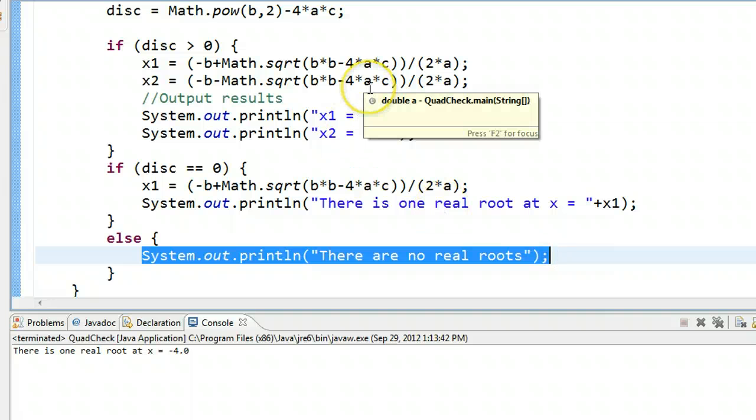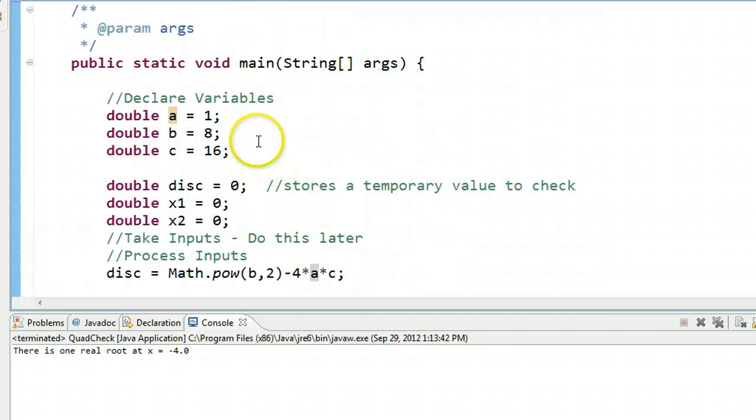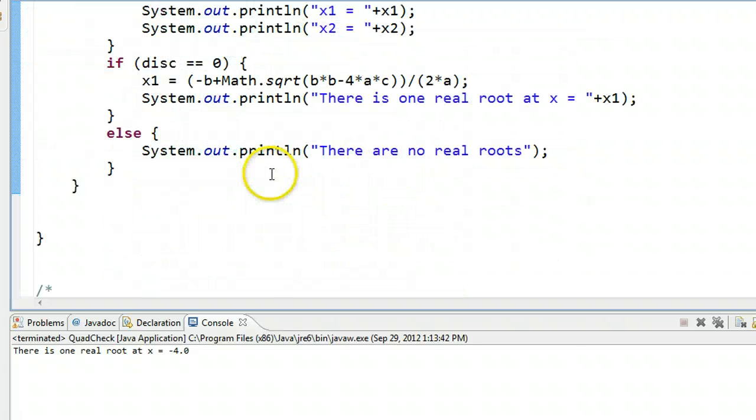Now there is a small little error in our program, and let me show you what that is. Let's change this again to a case where we have two unique roots. One, five, six. And let's watch what happens if I run this.